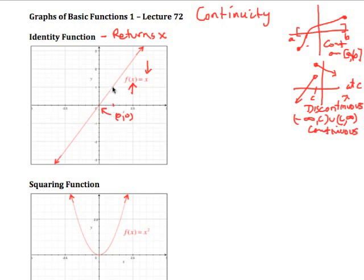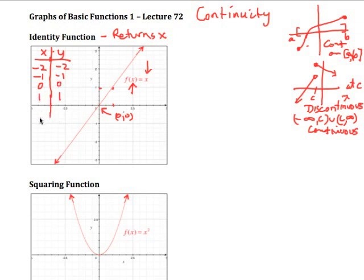You'll notice the identity function goes through the origin. When x is 1, y is 1. Looking at a table of values: when x is negative 2, y is negative 2; when x is negative 1, y is negative 1; when x is 0, y is 0; when x is 1, y is 1; and when x is 2, y is 2. Notice it goes on forever in both directions.